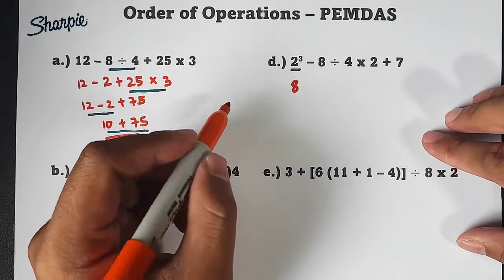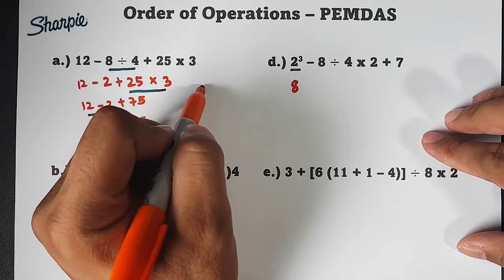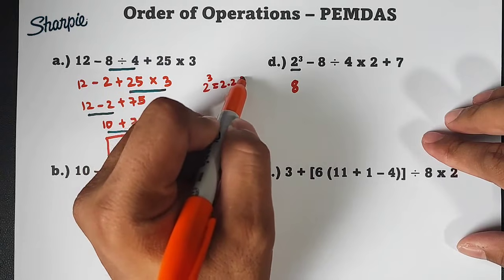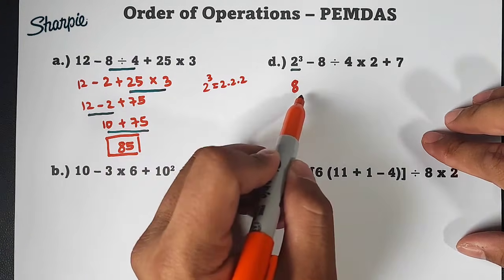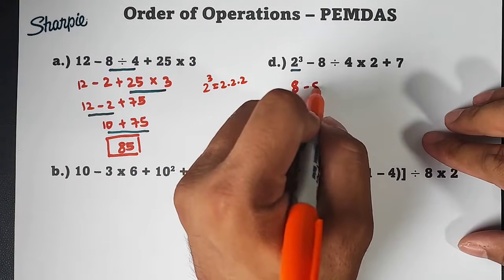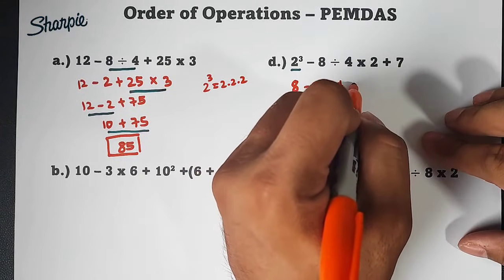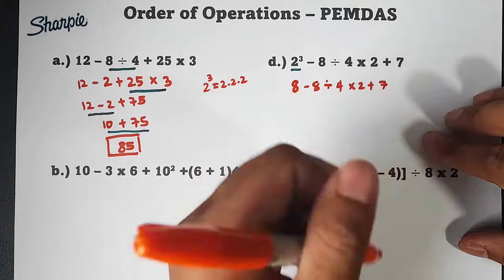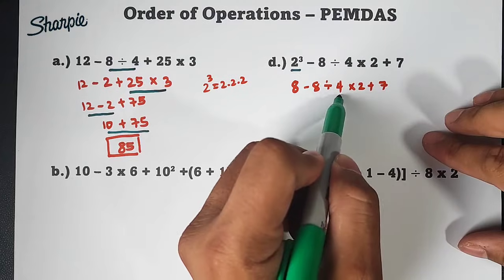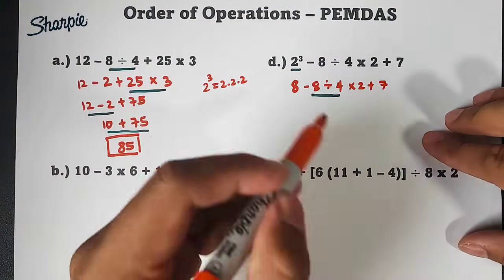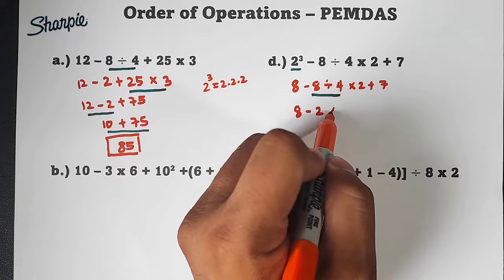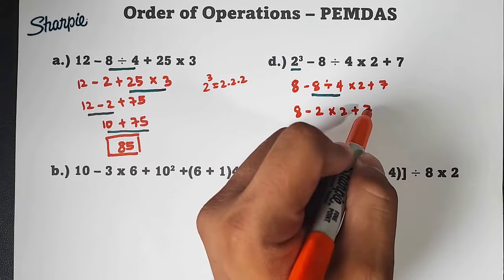Sir, why did it become 8? Many don't understand why it became 8. So let me discuss this. Our 2 cubed is the same as 2 times 2 times 2. 2 times 2 is 4 times 2 which is equal to 8. And then copy this: minus 8 divided by 4 times 2 plus 7. Again, you might be confused. Divide before multiply. We'll do this first. So it will become 8 minus 8 divided by 4 which is 2, times 2 plus 7.